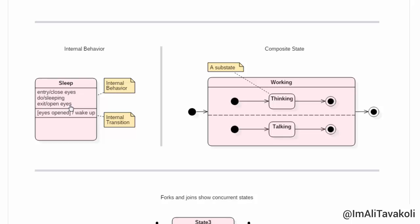as soon as we open our eyes, then the internal behavior state, which is sleep, ends. So, this is also our internal transition of our internal behavior state. When the eyes are opened, then wake up. And that's how we actually exit the sleep internal behavior.